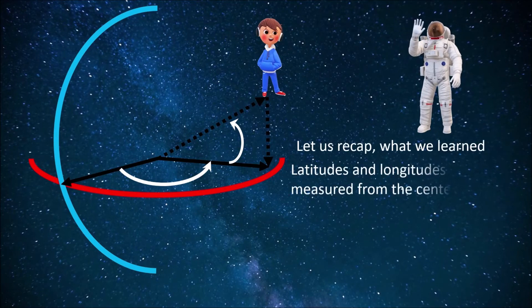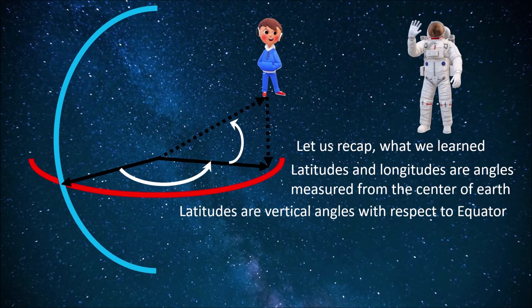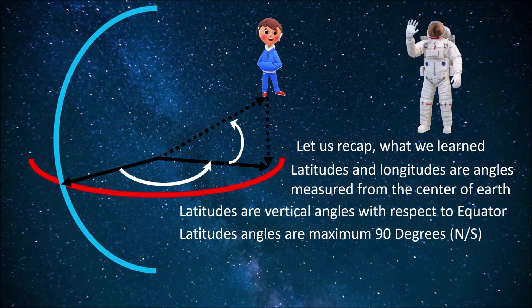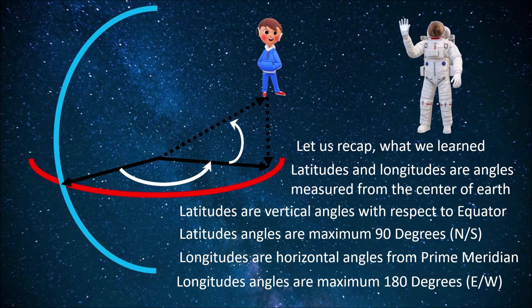Let us recap what we learned. Latitude and longitudes are angles measured from the center of the earth. Latitudes are vertical angles with respect to equator. Latitude angles are maximum 90 degrees north and south. Longitudes are horizontal angles from prime meridian. Latitude angles are maximum 180 degrees east or west.